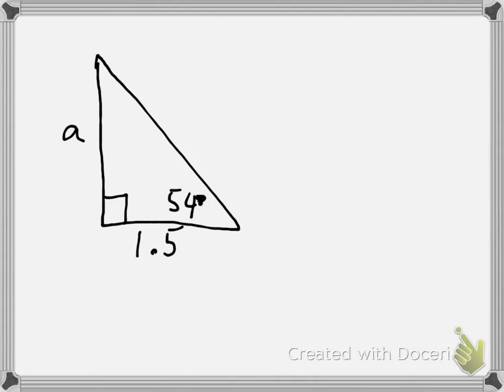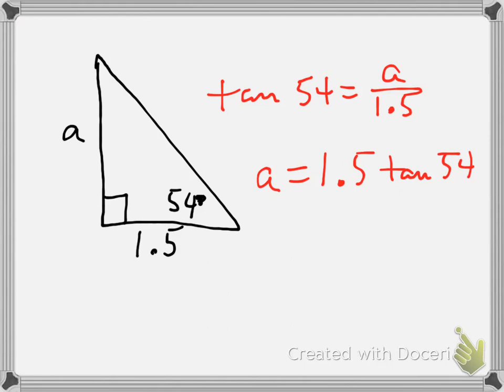Again, we have the same situation. When you do the trig here, you're gonna be doing tangent every single time, no matter what you're given. I've got tan 54 equals a over 1.5. This time the variable's on top, so you're gonna do 1.5 times tangent 54. Do it in that order.